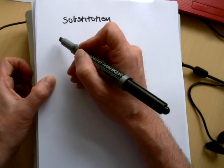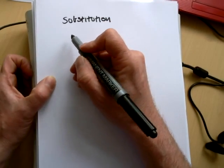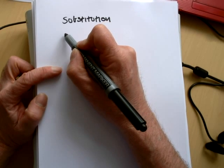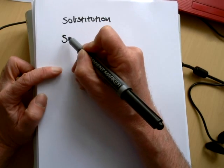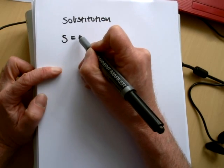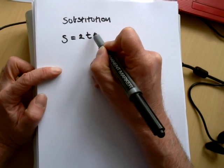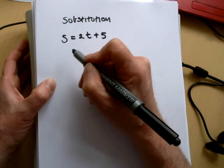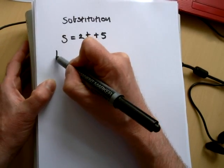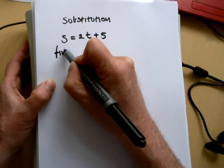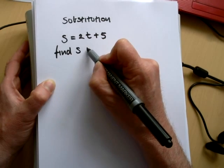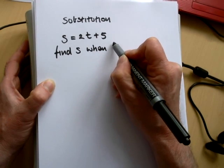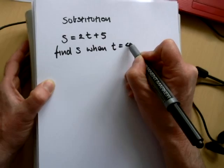This video is going to show you how to do some algebraic substitution. So say we have an expression that says that s equals 2t plus 5, and the question says find s when t equals 4.